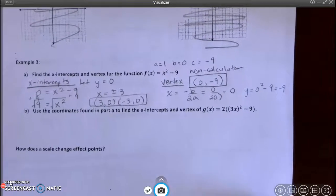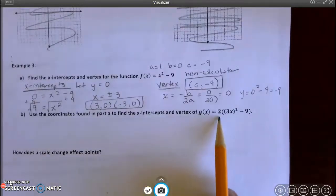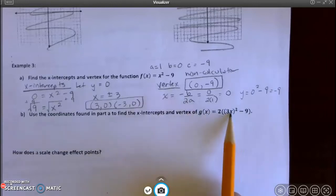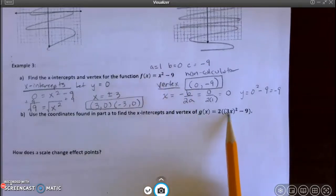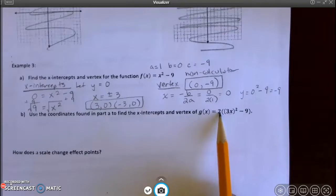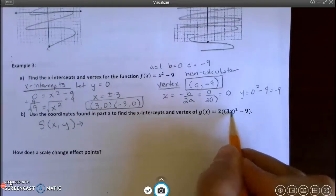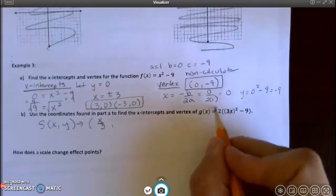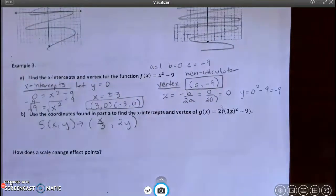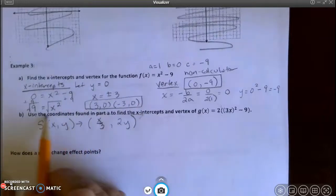All right. So it says use the coordinates found in part a to find the x-intercepts and vertex of this function here. That is obviously a scale change and a translation of, well, not, I'm sorry, not a translation. It is a scale change of the above. They both have the x squared and the minus 9. But the x is being multiplied by 3 and the y is being multiplied by 2. So I know that my x here in the equation is being multiplied by 3, which means it must be x divided by 3. And then my y is being multiplied by 2, so 2y.